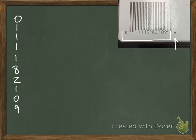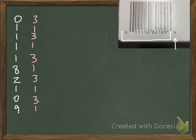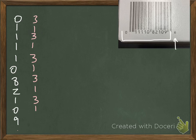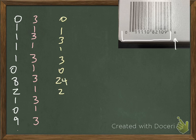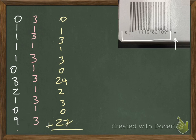I write the weights — 3-1-3-1-3-1 — next to each digit, but I notice I made an error and skipped a digit, so I fix that and get the full eleven digits lined up correctly. Now I multiply: 0×3=0, 1×1=1, 3×3=... working through each pair, giving me products of 0, 1, 3, 1, 3, 0, 24, 2, 3, 0, and 27. Adding them all up gives me 64.